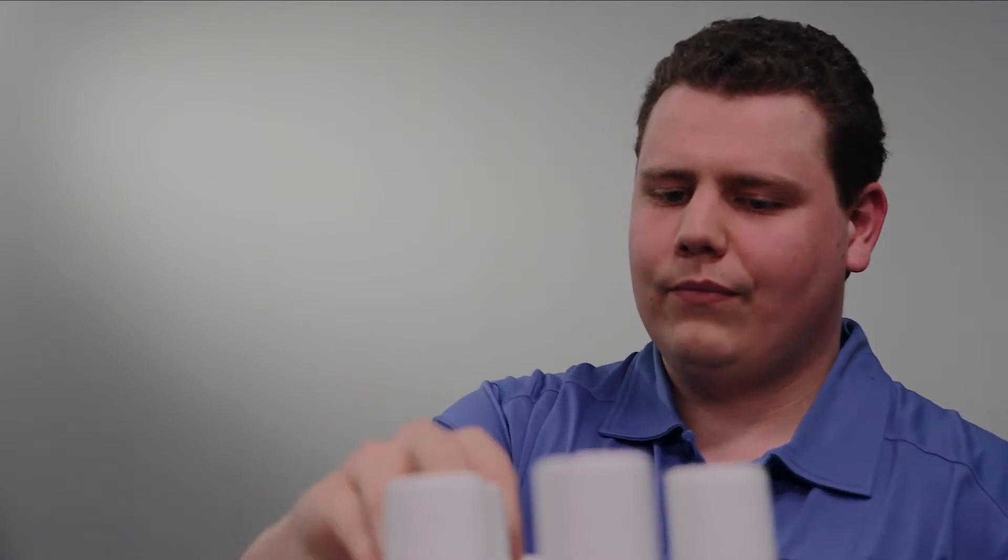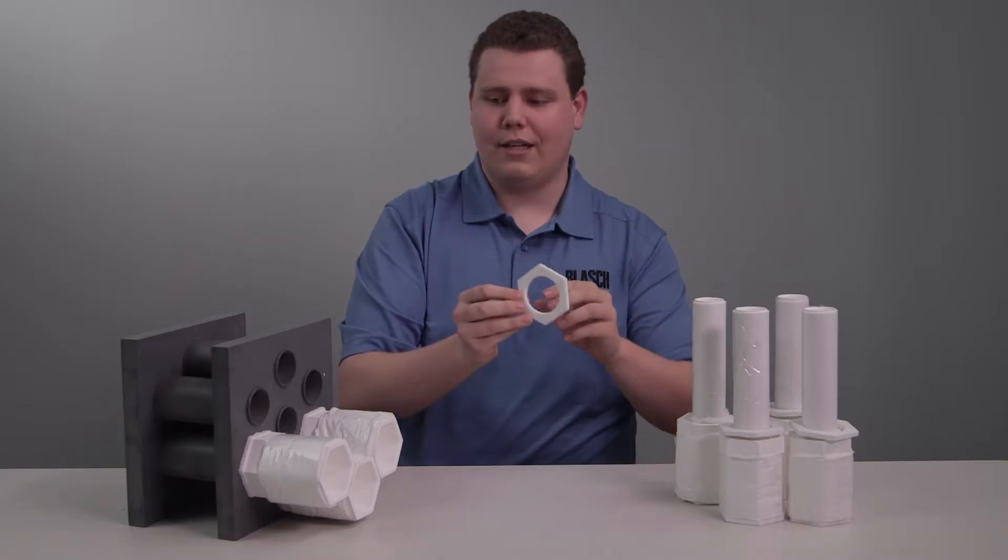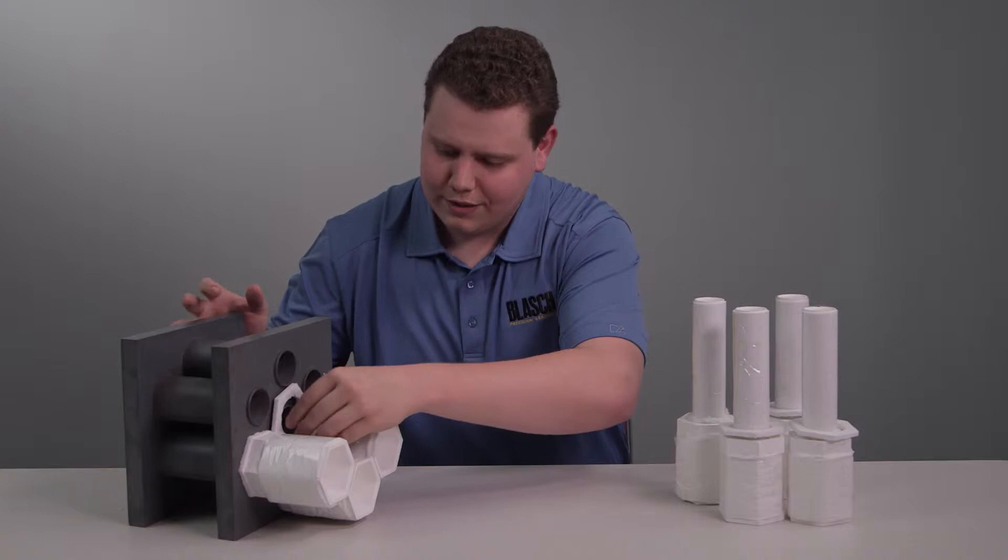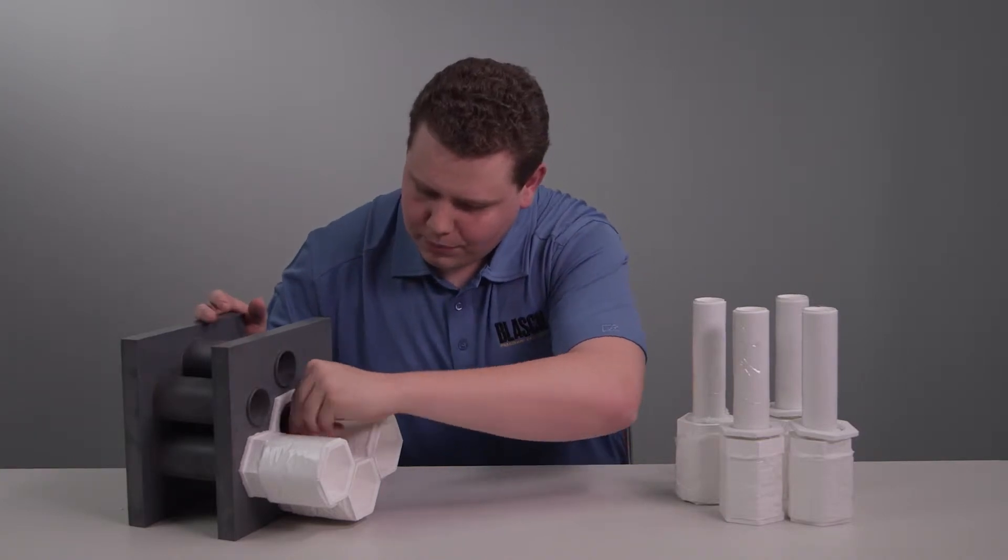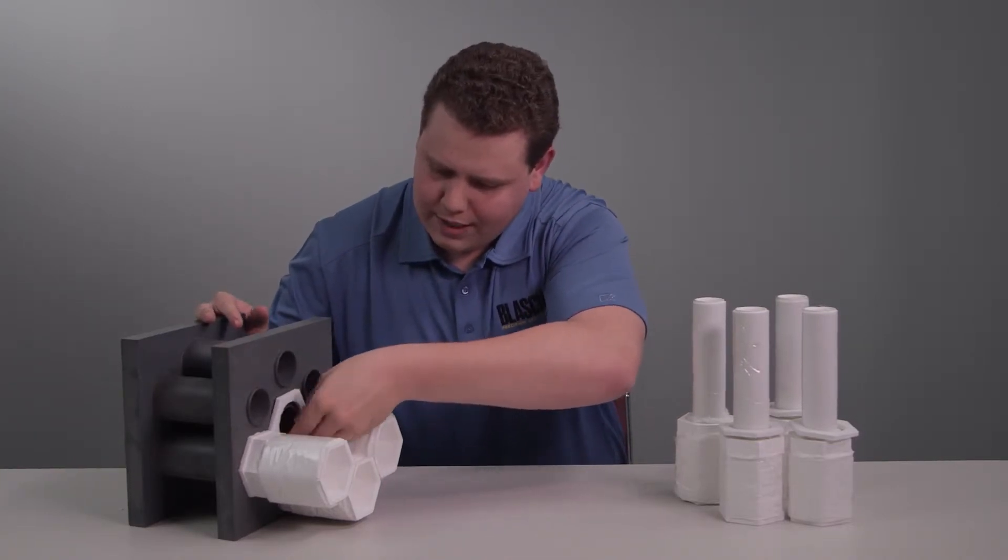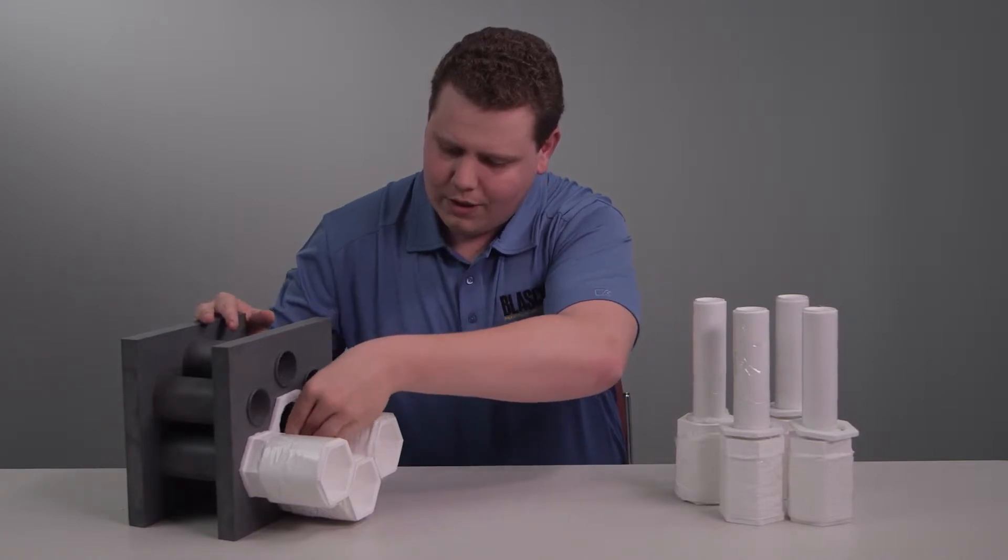To start the install, you're going to take a couple of the gaskets that come pre-cut to match your tube sheet. You'll place them on the tube sheet, and you want to put a couple on at a time so you can match them up against the other gaskets and make sure they're all aligned right.